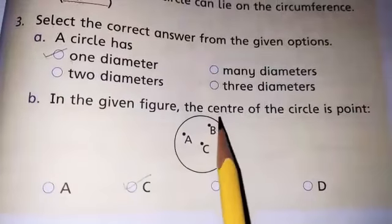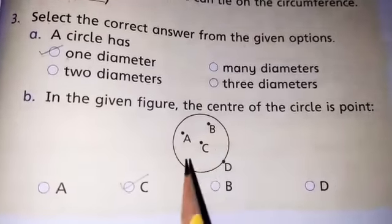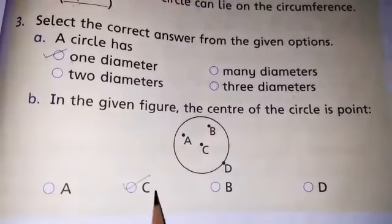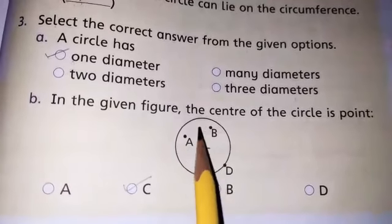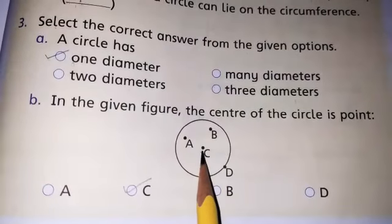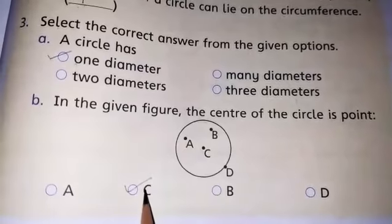In the given figure, the center of the circle is point what? Point A, C, B and D. Yes, students. What is the center point of the circle? Yes, at point C, to circle it.